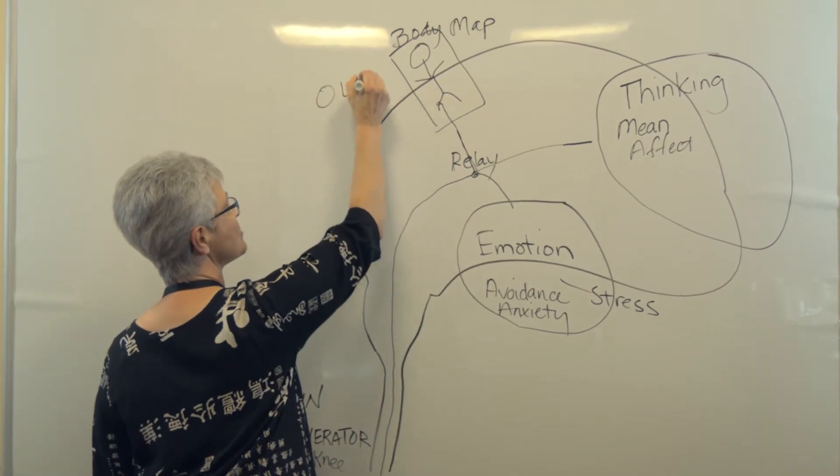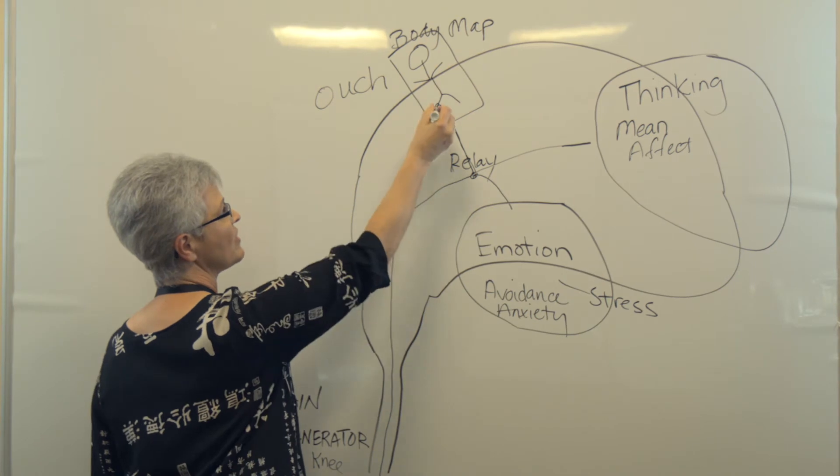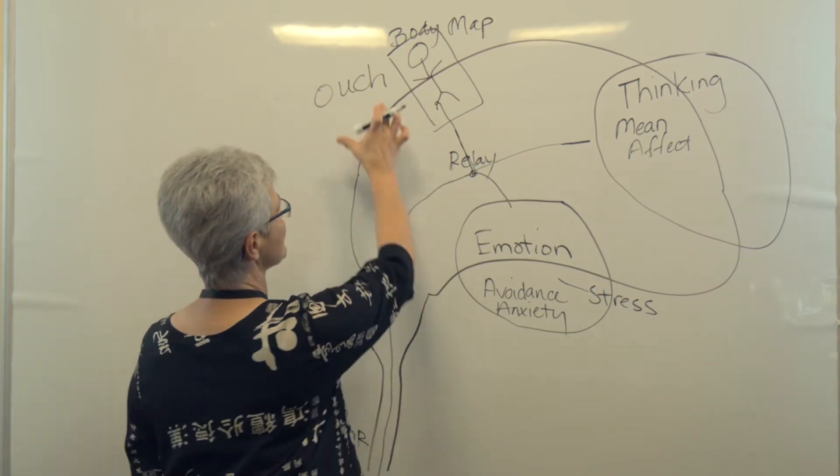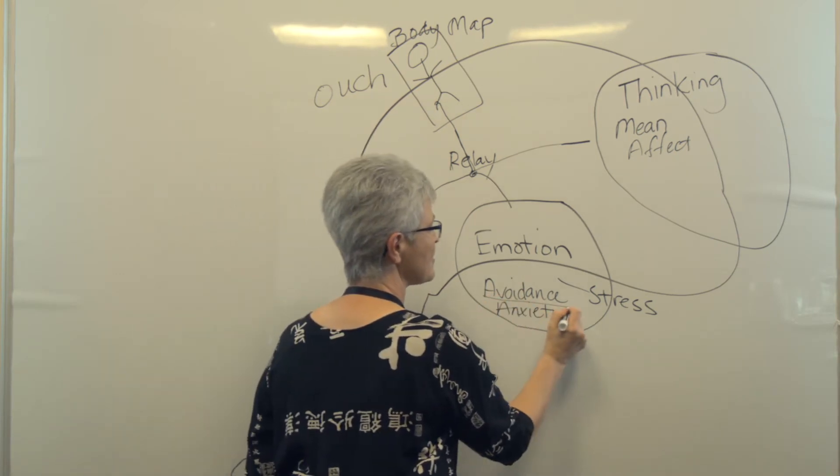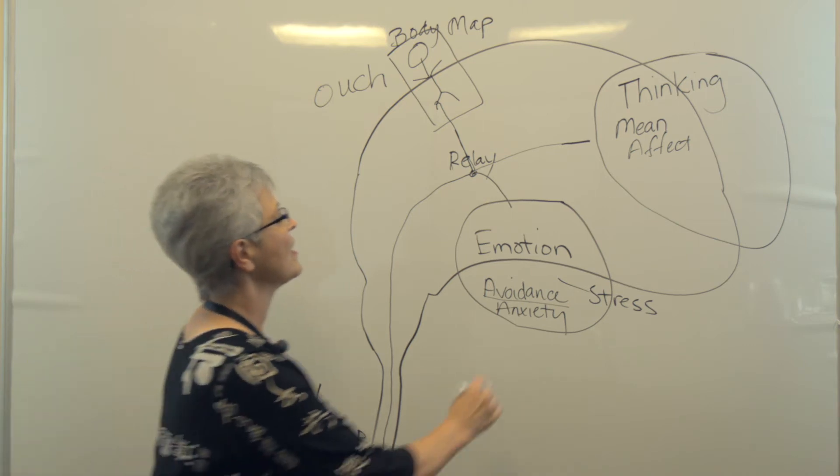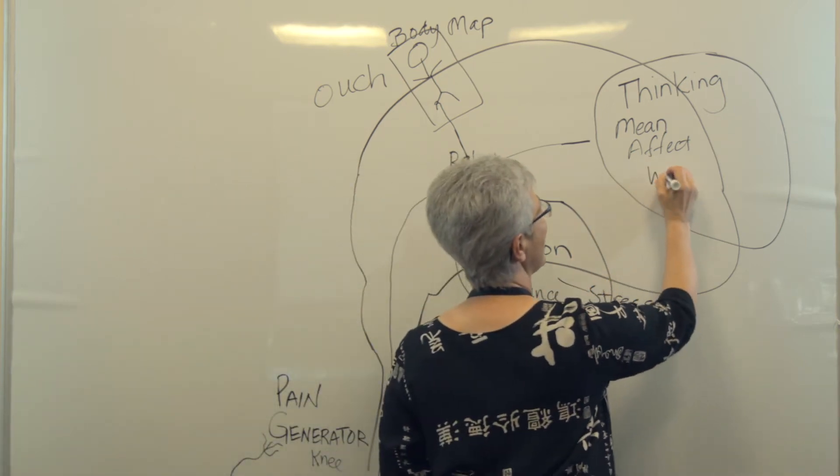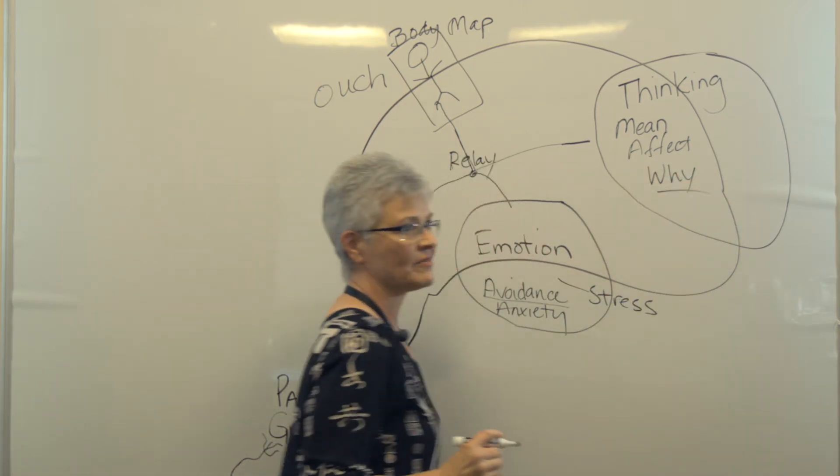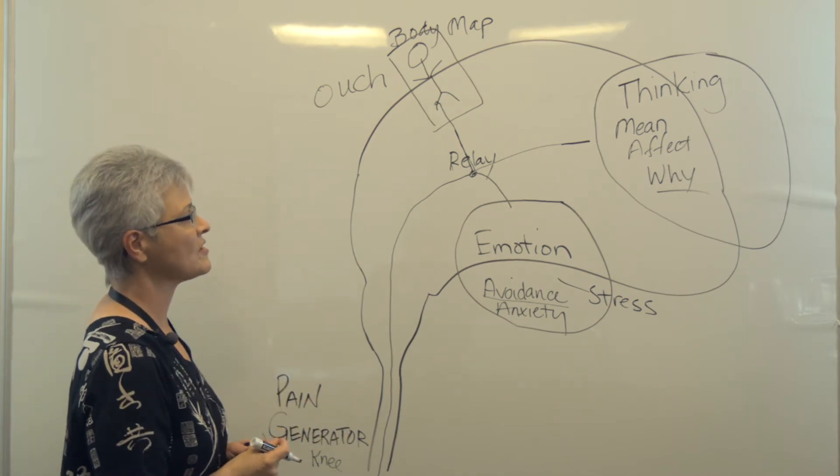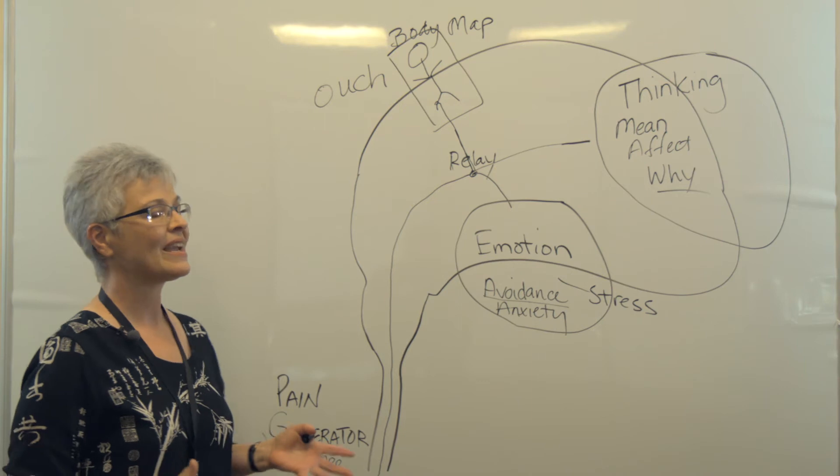Or you could kind of look at this whole picture as this is the ouch. It tells me where the pain is located and what it feels like. You get the ouch. You get the avoidance, that feeling of I want to get away from it. And also, why? Why do I have this pain? So those are the three major components of this overall pain experience.